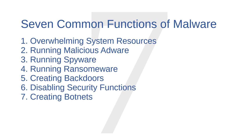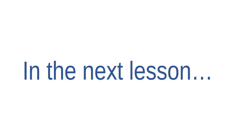In this video, we've covered seven different functions of malware: overwhelming system resources, running malicious adware, running spyware, running ransomware, creating backdoors, disabling security functionality, and creating botnets. This list is by no means complete — there are many other malicious possibilities — but these seven should give you a pretty good idea of what you're up against. In the next lesson, I'll help you understand the sources of malware, so that you have a better idea of how to avoid the attacks I've just been describing.